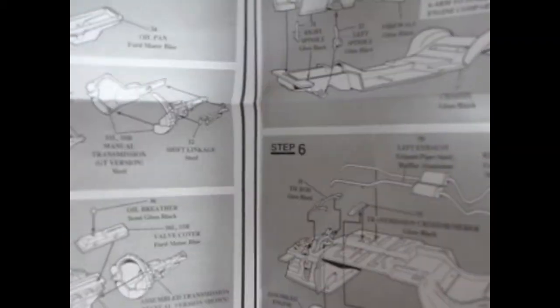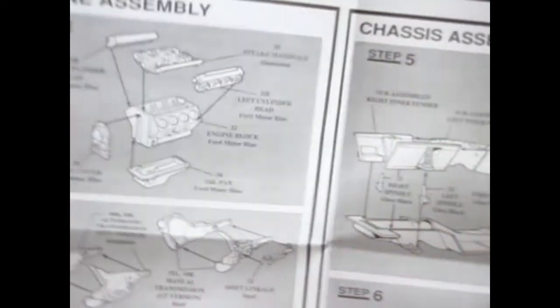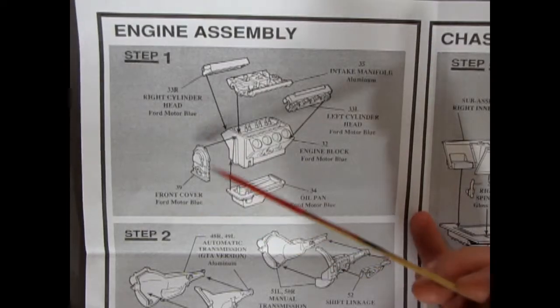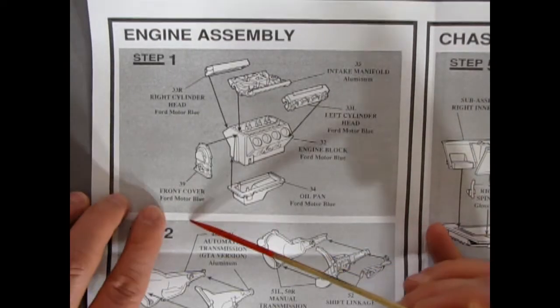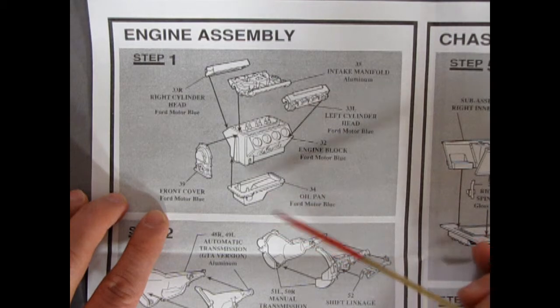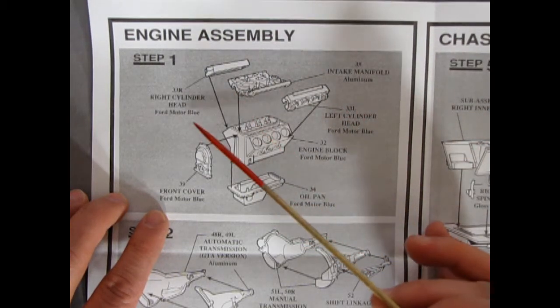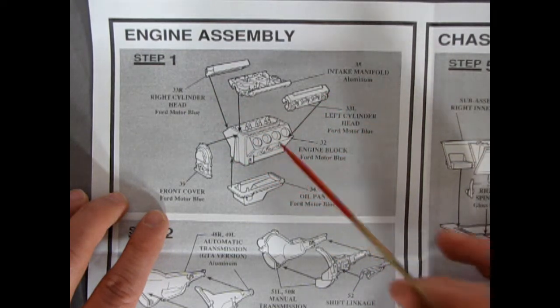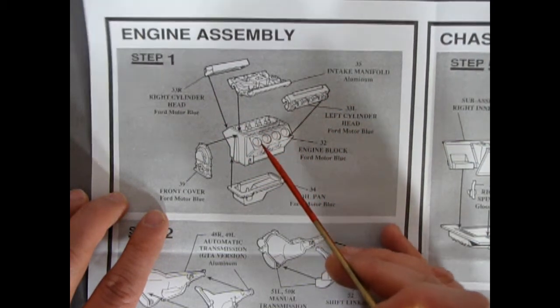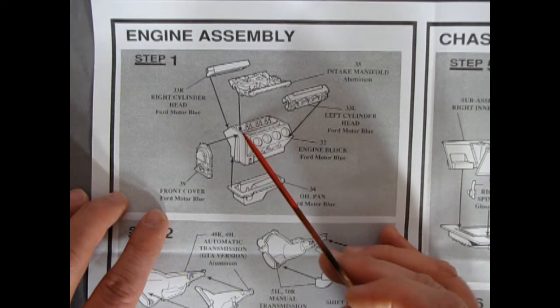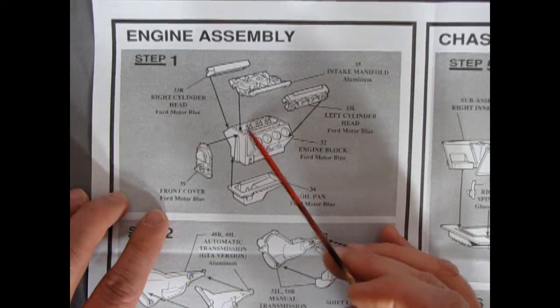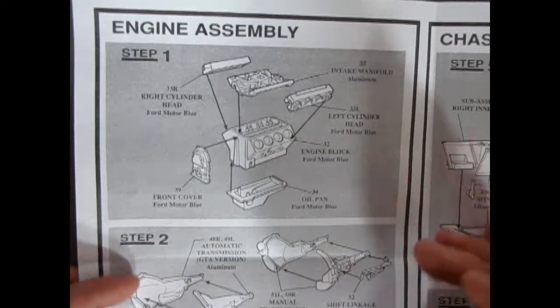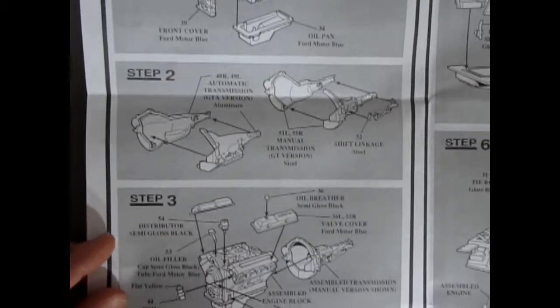Okay so take a look at our first image here. This is our engine assembly, step one. So of course it actually tells you the colors to paint everything. So we have Ford Motor Blue for basically this entire motor. So you have your intake manifold, your right and left hand cylinder heads, your engine block. And this one is really nice because it has the pistons molded into it as well as the valve ends or for your rocker ends, sorry. And then your oil pan down here and then getting into step two.